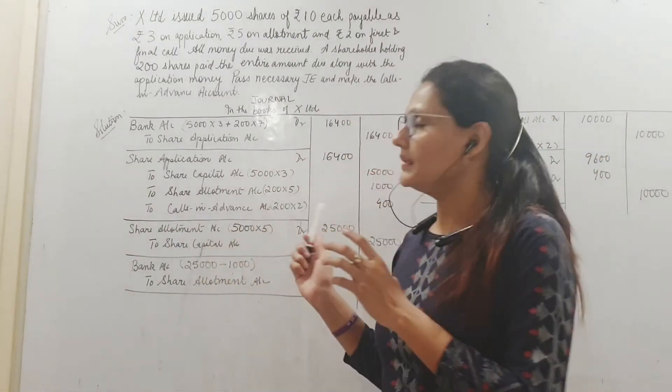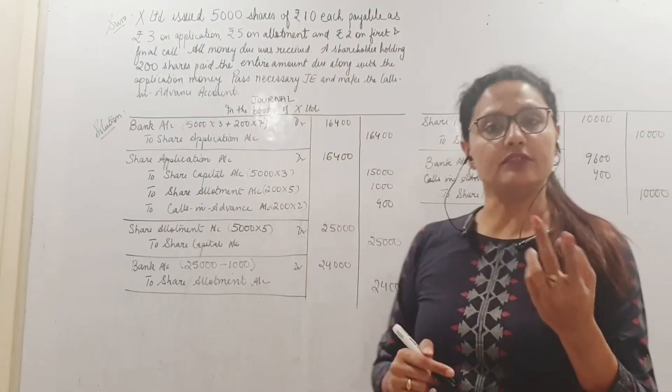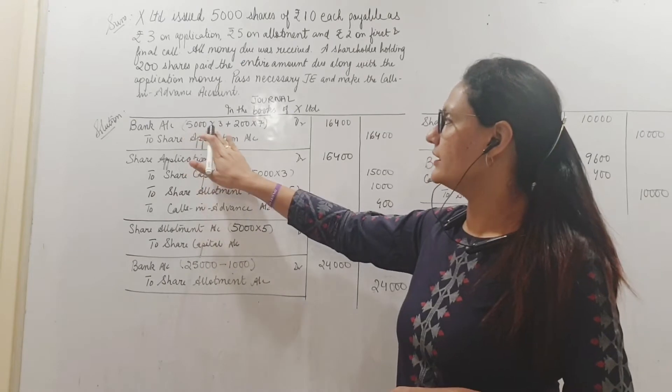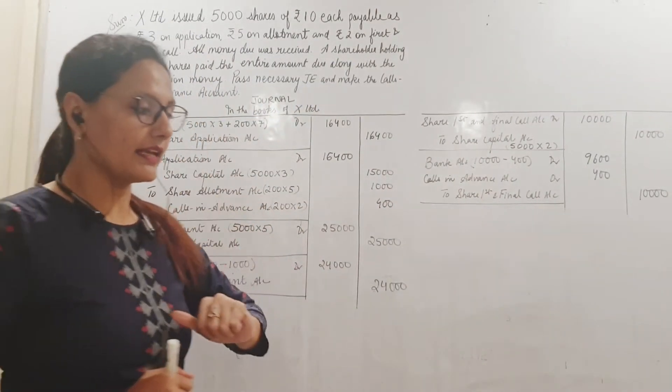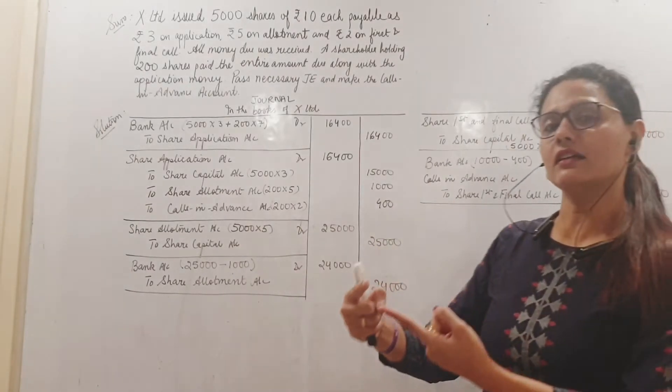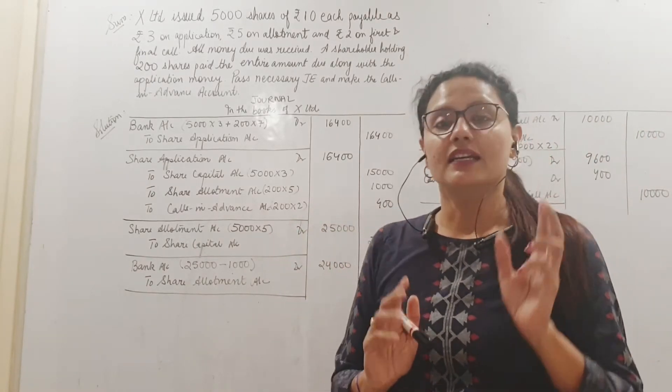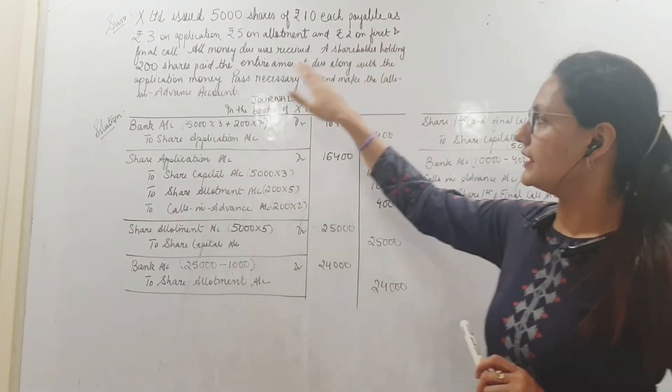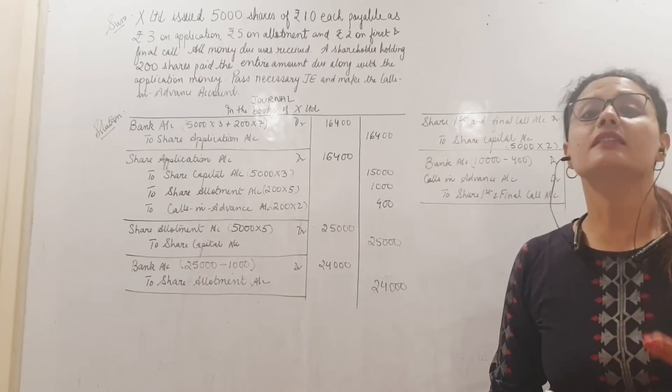So let us see, at the time of application what did we get? I have issued 5000 shares. Application money is 3 rupees per share. So how much should I have received at the time of application? 5000 into 3, that is 15,000 rupees. But the over enthusiastic shareholder that we have has paid us the application money, allotment money and the call money on these 200 shares only.